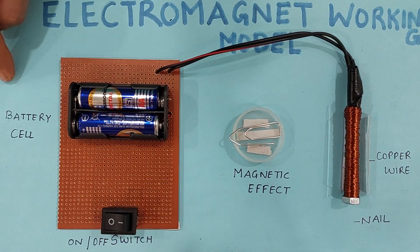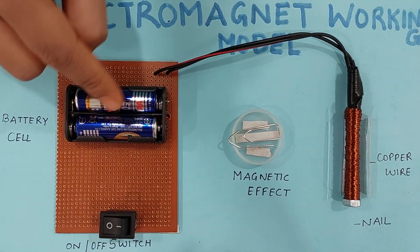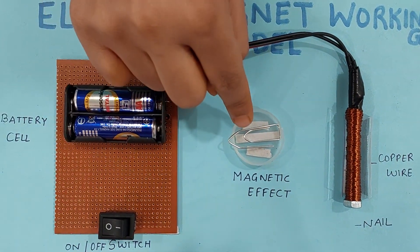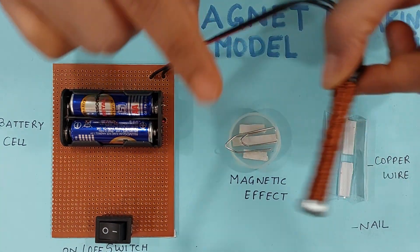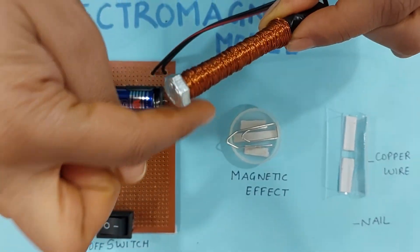Now materials required for this activity are you can see two cells or more than two cells we can use, switch, iron pin. This is my iron nail and I have wound a copper coil on this iron nail.